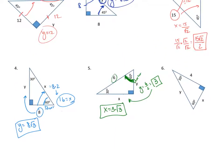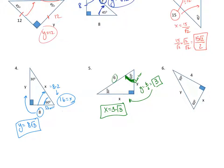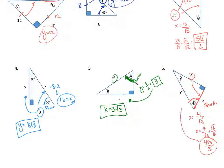Back to problem 6: we have 4 at the longer leg. Identifying the 60-degree angle, I'm going to the shorter leg, so I divide by the square root of 3. Rationalizing the denominator by multiplying top and bottom by root 3 over root 3 gives x equals 4 root 3 over 3. Going across the 60 to the hypotenuse, I multiply by 2, giving y equals 8 root 3 over 3.